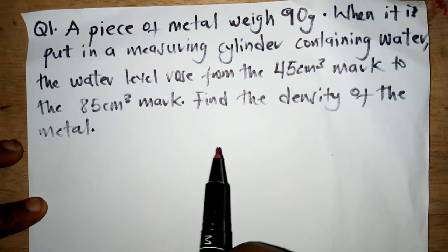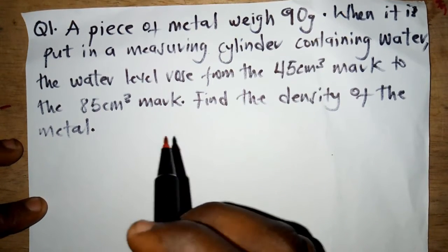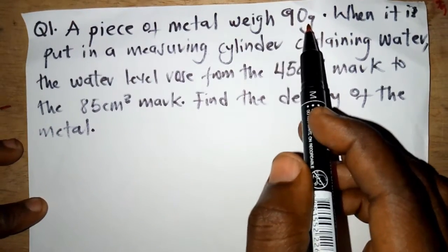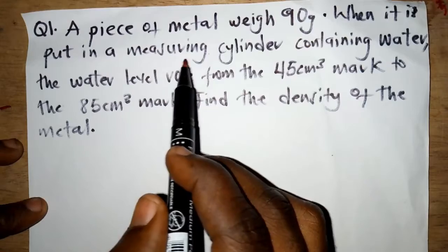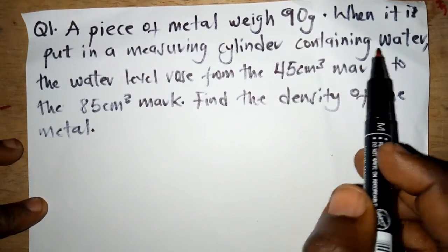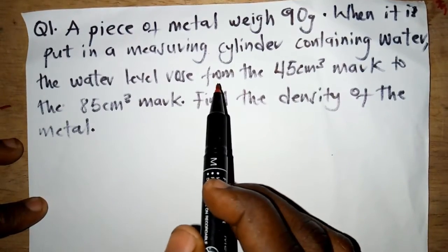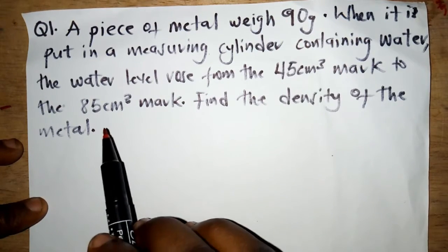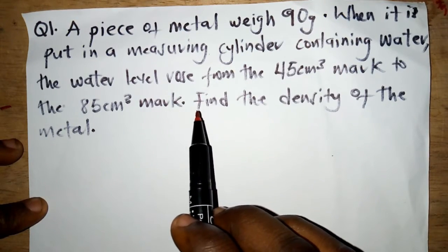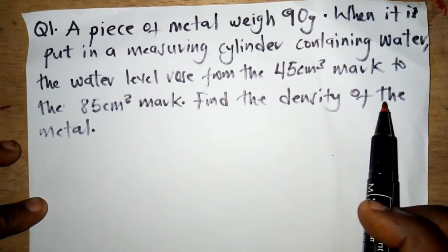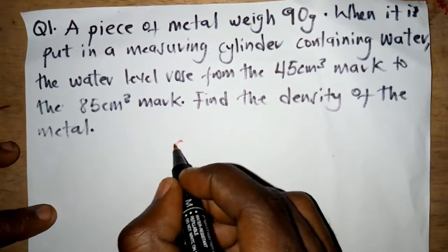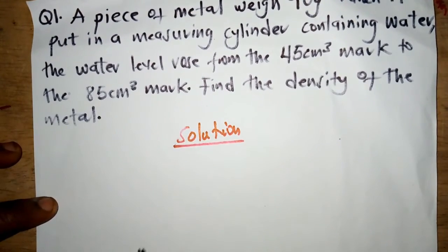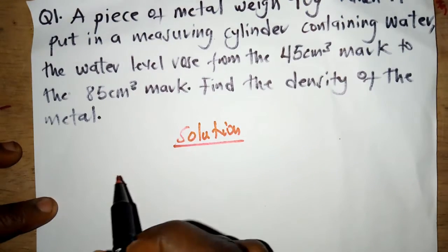Let's move on to the question. It's a density question: a piece of metal weighing 90 grams is put in a measuring cylinder containing water, and the water level rises from the 45 centimeter cube mark to the 85 centimeter cube mark. We need to find the density of the metal.